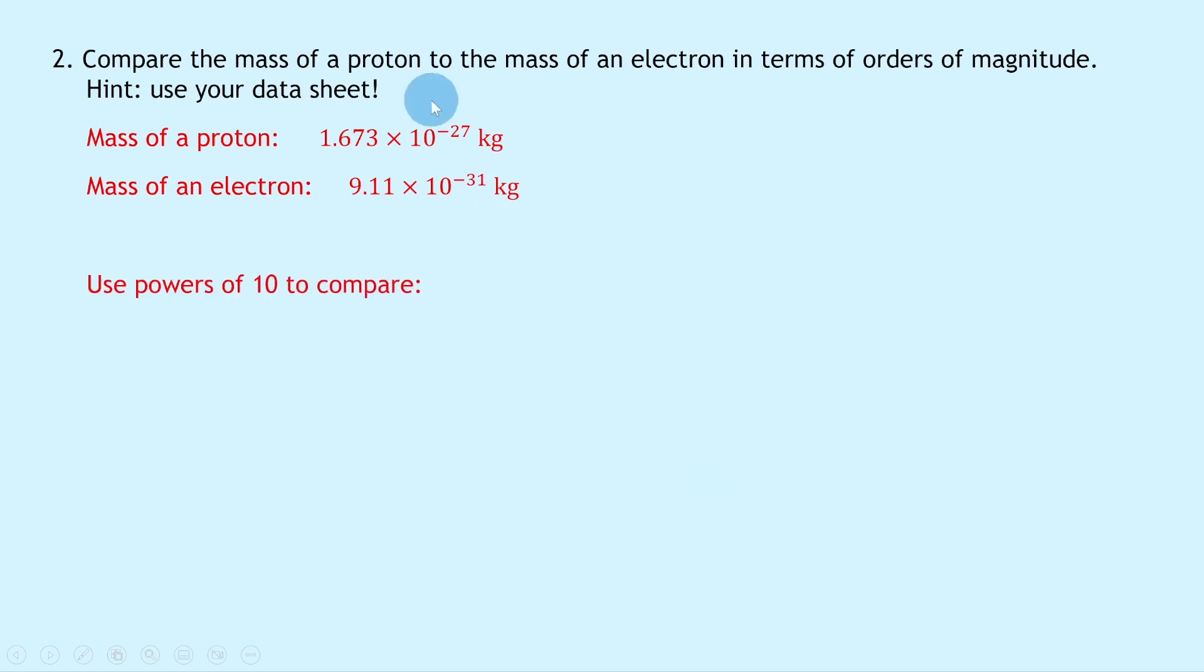In order to compare these sizes we want to use powers of 10 to compare them. So what we want to do is take the larger number and divide it by the smaller number. The larger number is going to have the smallest negative power, whereas the smaller number will have the biggest negative power. So if we take the mass of our proton and divide it by the mass of an electron and put that into your calculator, you should get an answer of 1836.